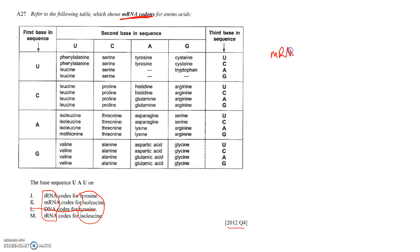If it's mRNA, U, A, U, what we're going to do is look up U, A, U and that gives us tyrosine. So mRNA codes for isoleucine. That one must be wrong.